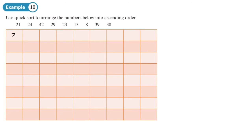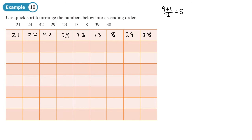Now we'll use the quicksort algorithm on the list: 23, 13, 8, 39, 38... There are nine values in the list. To find the pivot, we do nine plus one divided by two, giving us the fifth value. Counting through the list, the fifth value is 23, so 23 is our first pivot.